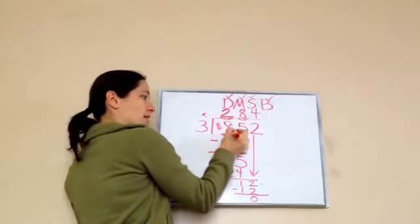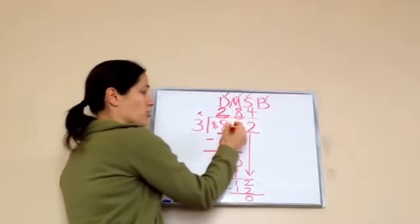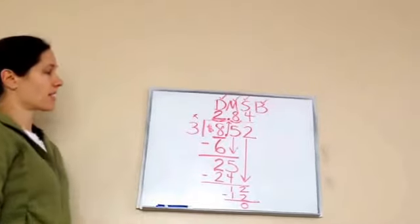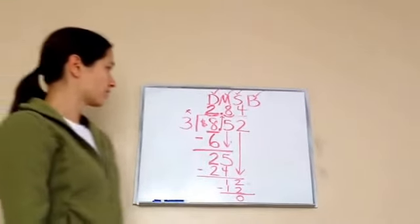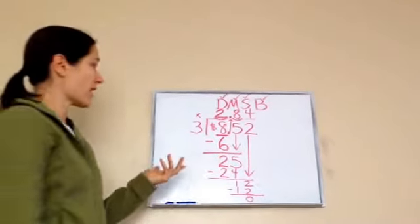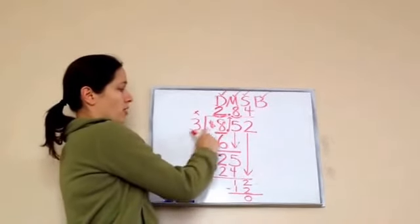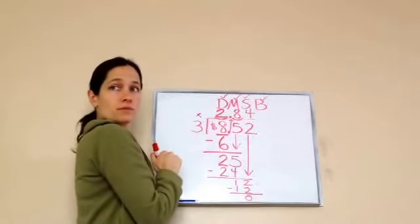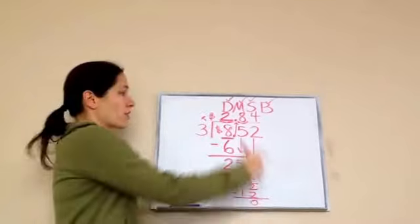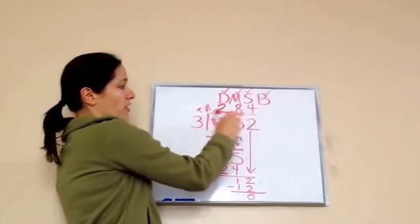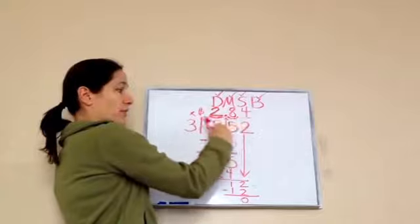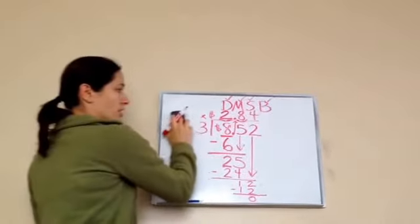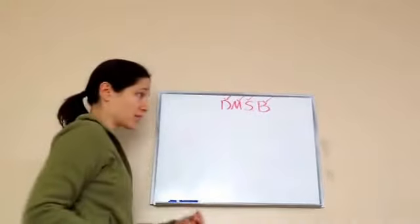Now, it's important when you see this decimal — when you're working with decimal problems in division, you're just going to slide it up. So if we're working with a decimal problem, say you bought three notebooks for a total of $8.52 — how much was each notebook? $2.84. See that? So we have $2.84 for each notebook. If you multiply it by three, you would get $8.52 back. So that's how it works — that's how you do one with a decimal number.